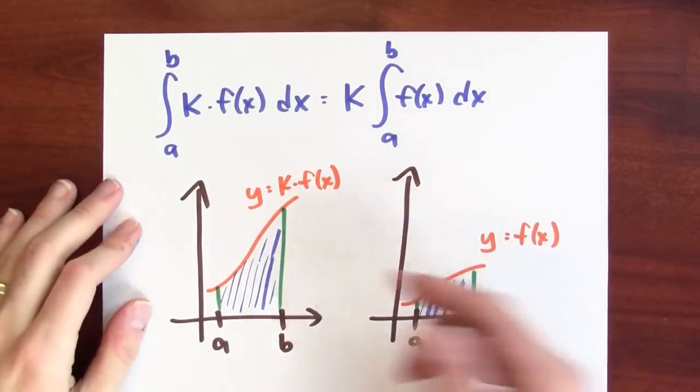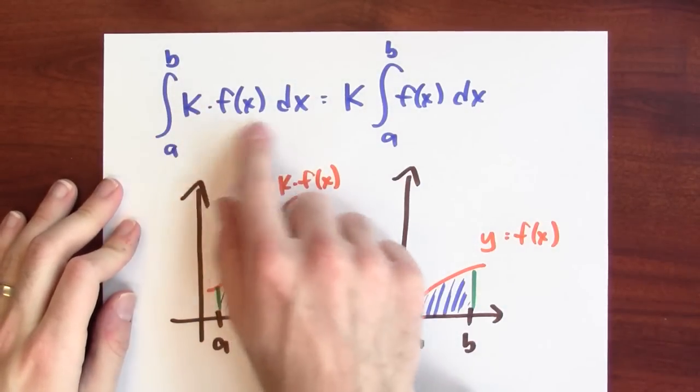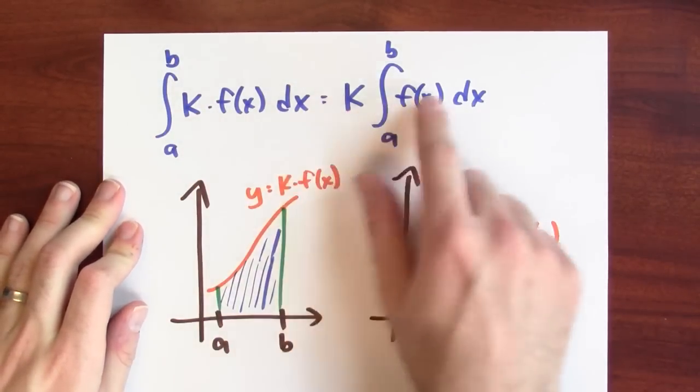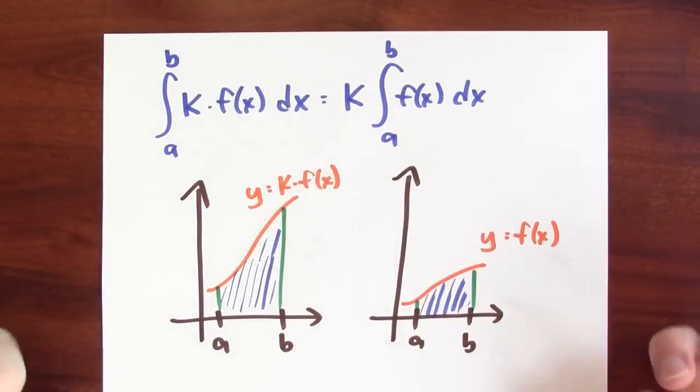There's also a constant multiple rule. Here's the constant multiple rule: for some constant K, the integral from A to B of that constant times a function is that constant times the integral of that function. And this also makes sense geometrically.